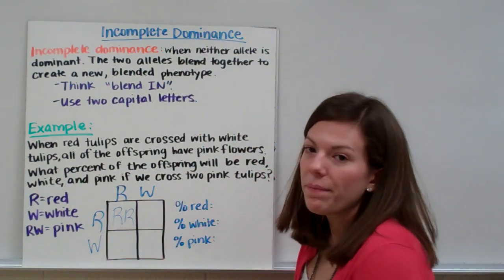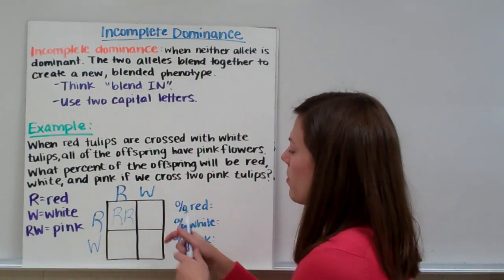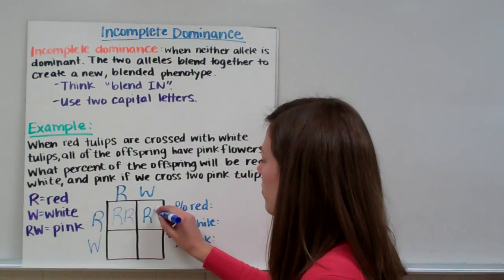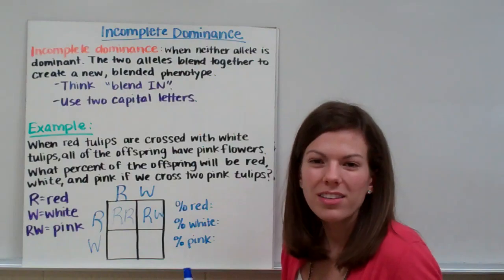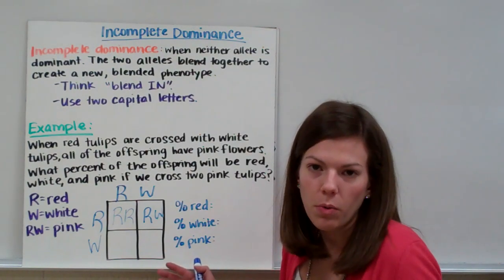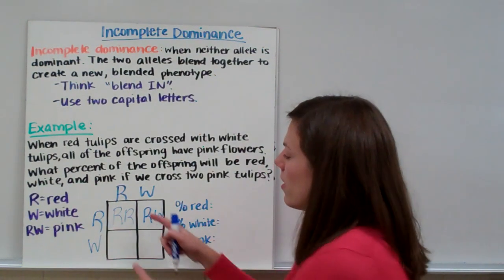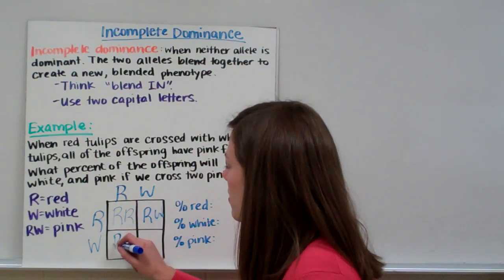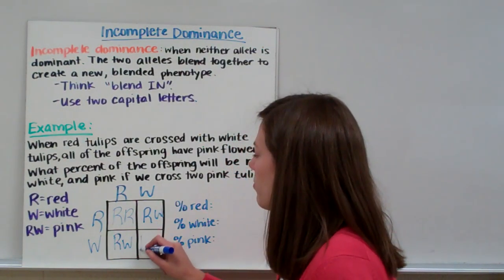First we get R, R. Then we do the same thing - we have R, W. And if you put W, R instead of R, W, it means the same thing. So don't worry about that. R, W, W, R - it means the same thing. And then we have R, W again, and then W, W.